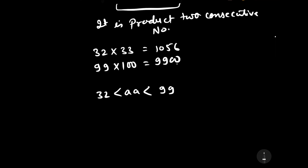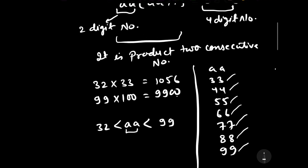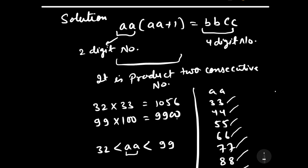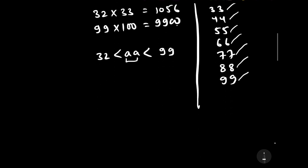Further, since bb is a repeating unit digit number, the value of bb will be either 33, 44, 55, 66, 77, 88, or 99. It would be easy to multiply each number with its consecutive number to find the pattern, but this is not the proper way to solve it. Let us solve it the proper way.